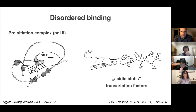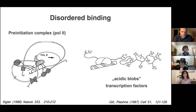We also knew that there are proteins that don't want to fold upon binding, and they exhibit so-called disordered binding. For example, proteins forming the pre-initiation complex remain disordered or conformationally heterogeneous in their bound form. These are transcription factors, also denoted as acidic blobs, because there is an accumulation of charges.